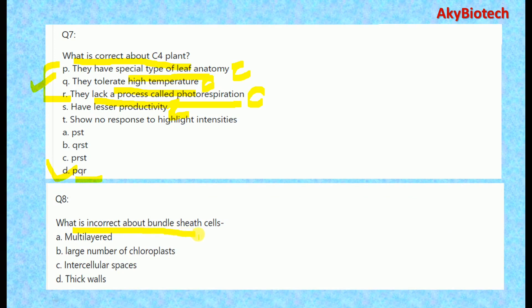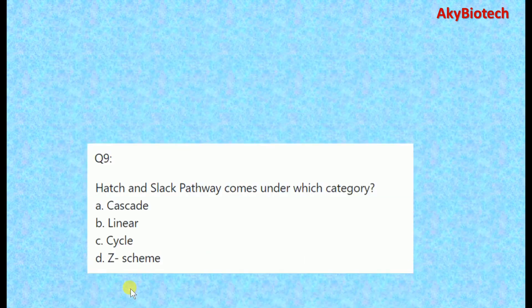Question eight: what is incorrect about bundle sheath cells? We know that bundle sheath cells are multi-layered — correct. They have a large number of chloroplasts — correct. They have intercellular spaces — this is the incorrect statement about bundle sheath cells. They also have thick walls — again a correct statement.